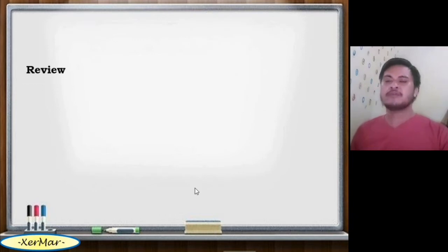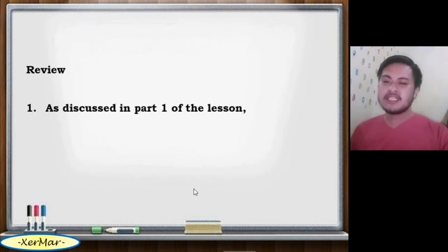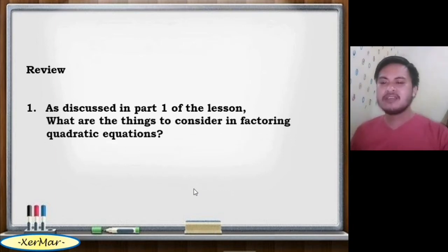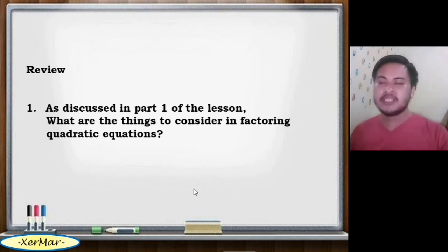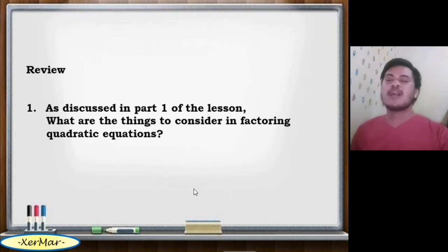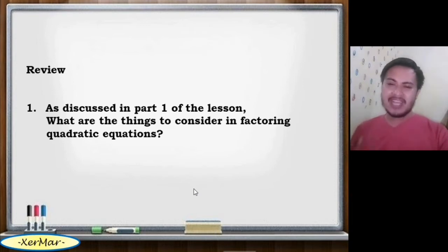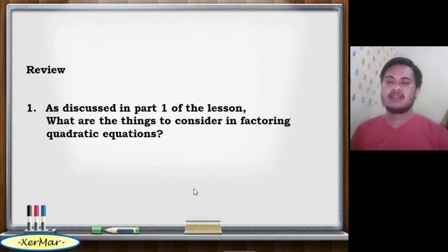Alright, review. As discussed in part 1 of the lesson, what are the things to consider in factoring quadratic equations? Always remember that in factoring, the equation must be in standard form since we are following the zero product property. Considering the value of a equals 1, identify the values of b and c respectively. Then find the factors of c with the sum of b.